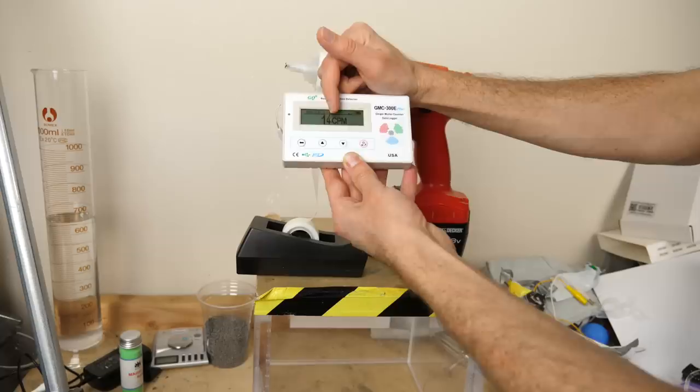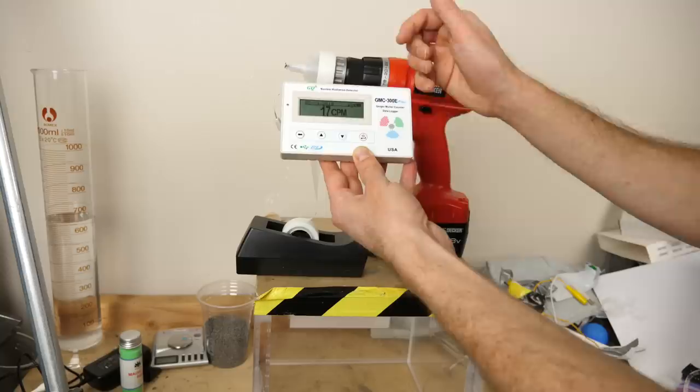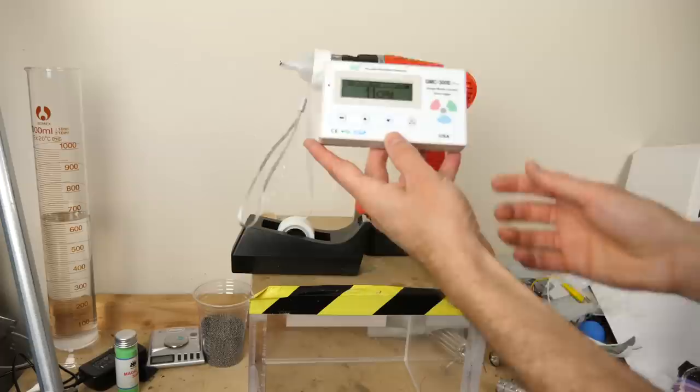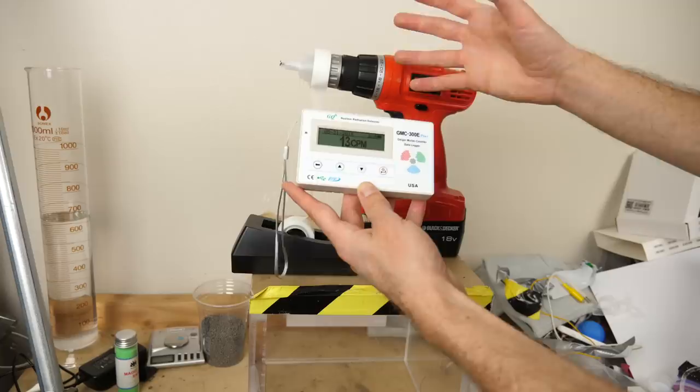So the count on here is called clicks per minute. So right now it's at around 17 clicks per minute. So this is just background radiation. So of all these clicks that you hear, about half of it is coming from the air. It's coming from the radon in the air.